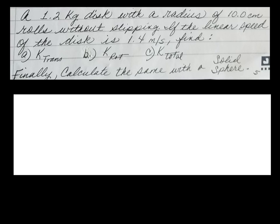A 1.2 kilogram disc with a radius of 10 centimeters, which you will convert to meters, rolls without slipping. If the linear speed of the disc is 1.4 meters per second, find: a) the translational kinetic energy, b) the rotational kinetic energy, and c) the total kinetic energy. Finally, calculate the same with a solid sphere.